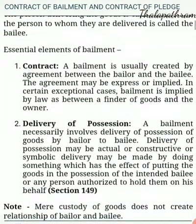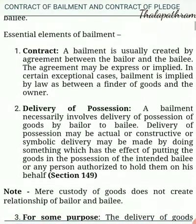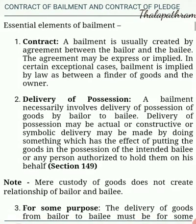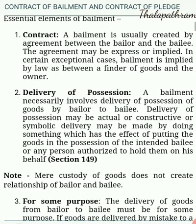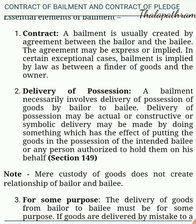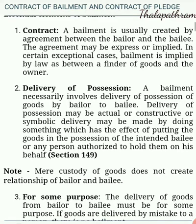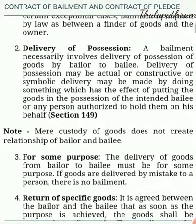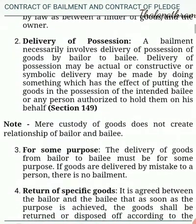Second, Delivery of Possession: A bailment necessarily involves delivery of possession of goods by bailor to bailee. Delivery of possession may be actual, constructive, or symbolic. Delivery may be made by doing something which has the effect of putting the goods in the position of the intended bailee or any person authorized to hold them on his behalf. Section 149 Note: Mere custody of goods does not create the relationship of bailor and bailee.